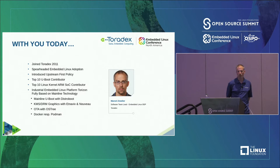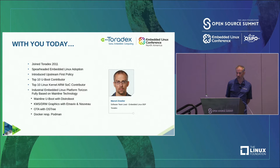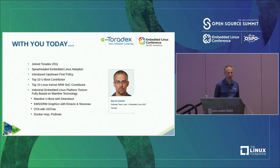Let me introduce myself. I joined Toradex in 2011, so more than 10 years ago. I spearheaded the embedded Linux adoption there. I introduced an upstream-first policy and at times I was a top 10 U-Boot and kernel contributor. Our latest embedded Linux platform is an industrial platform called Torizon, fully based on mainline technology — mainline kernel, mainline U-Boot, with Distroboot, KMS DRM graphics, Etnaviv or Nouveau, OTA updates with OSTree, and Docker/Podman for running applications in containers.